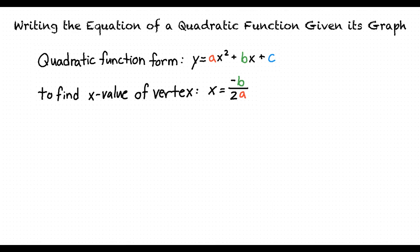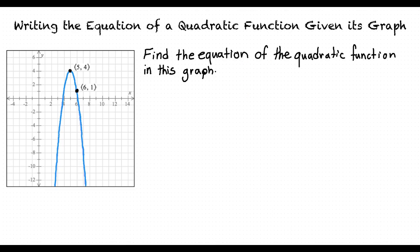This problem is asking us to find the equation of the quadratic function with this graph. It's important to note that this function's vertex has the coordinate point (5, 4). We are also given another point on the graph with the coordinate point (6, 1). We'll be using both of these points to find this function's a, b, and c values.